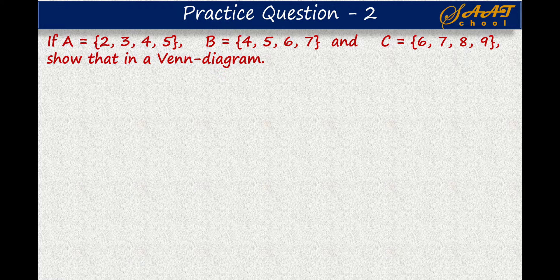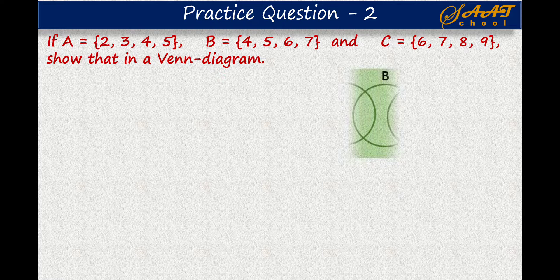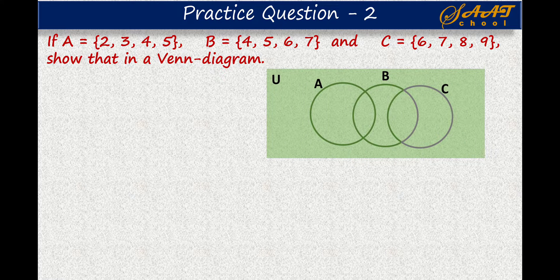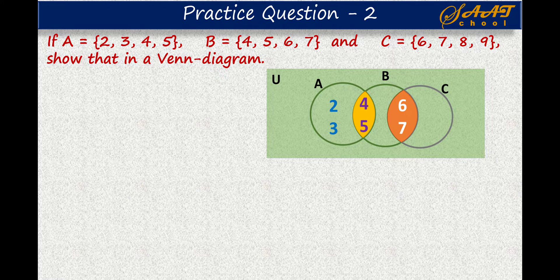So the first thing, let's find out if there are any common elements among A, B, and C. There are no common elements among A, B, and C. So the Venn diagram that we discussed in the earlier video is something different in this case. The Venn diagram looks like this. Here A and B are overlapping sets, and B and C are overlapping sets. The common elements between set A and set B are 4 and 5. The common elements between set B and set C are 6 and 7. The elements left in set A are 2 and 3, and the elements left in set C are 8 and 9. So this is a simple Venn diagram for set A, B, and C. If you managed this, congratulations.